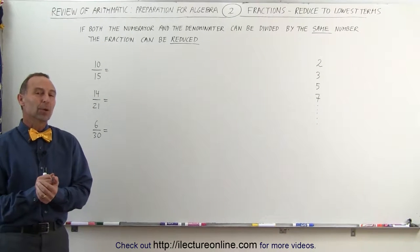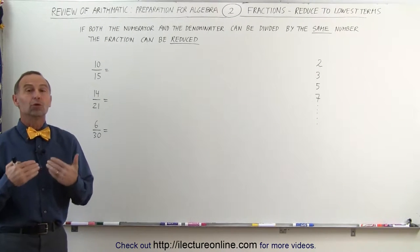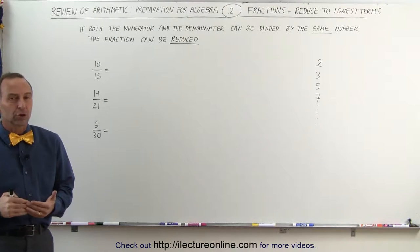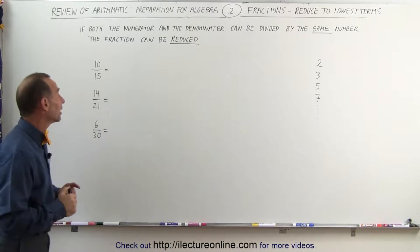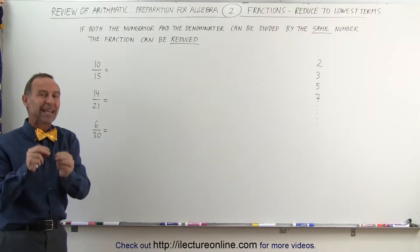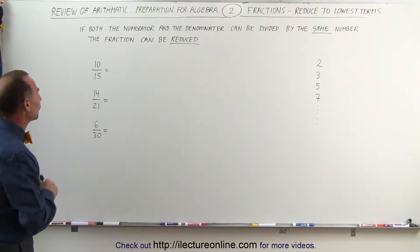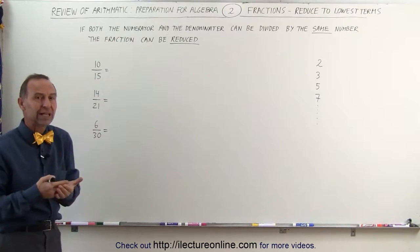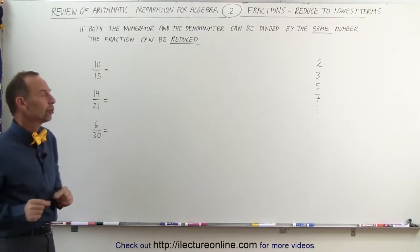Welcome to Electronline. What do we mean when we say reduce a fraction to its lowest terms? What that means is that if both the numerator and the denominator can be divided by the same number, we can reduce the fraction. We can write the fraction in simpler terms with smaller numbers.